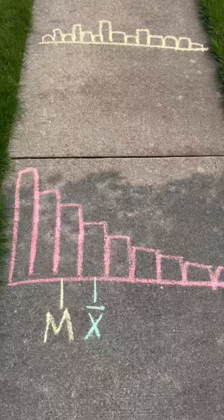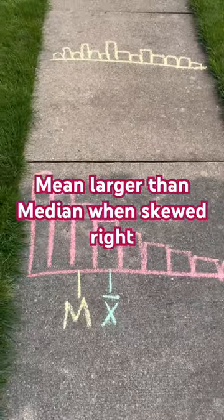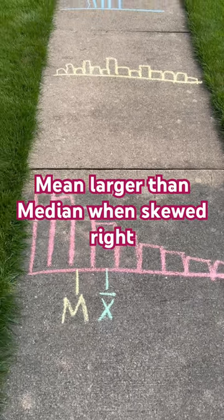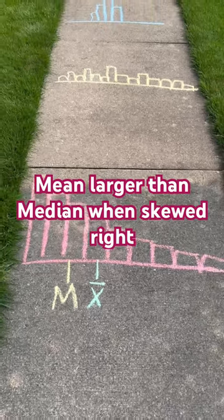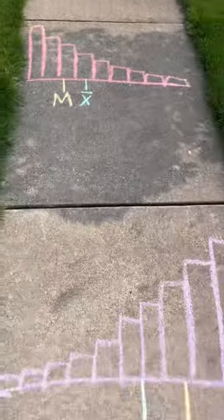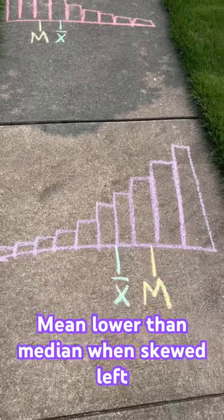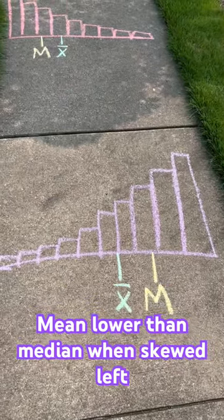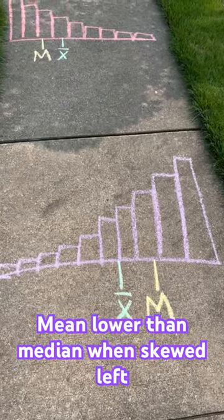Finally, we have a graph that's skewed to the right. When you're skewed to the right, your mean is going to be a little bit higher than the median because of the skewness to the right. And when you're skewed to the left, the mean is going to be a little bit lower than the median because of the skewness to the left.